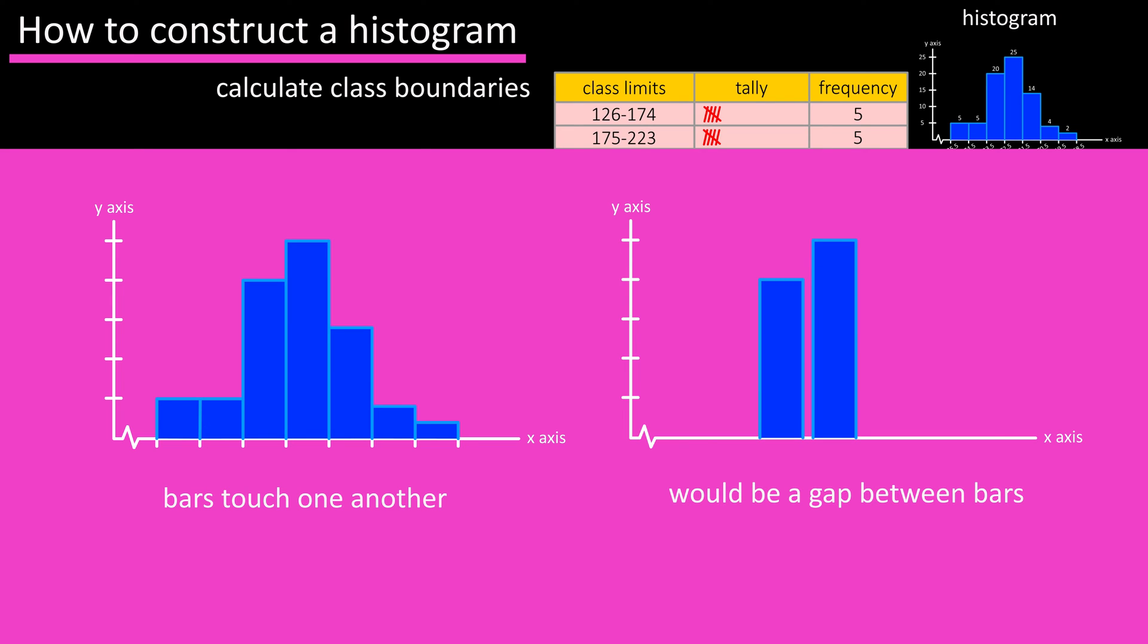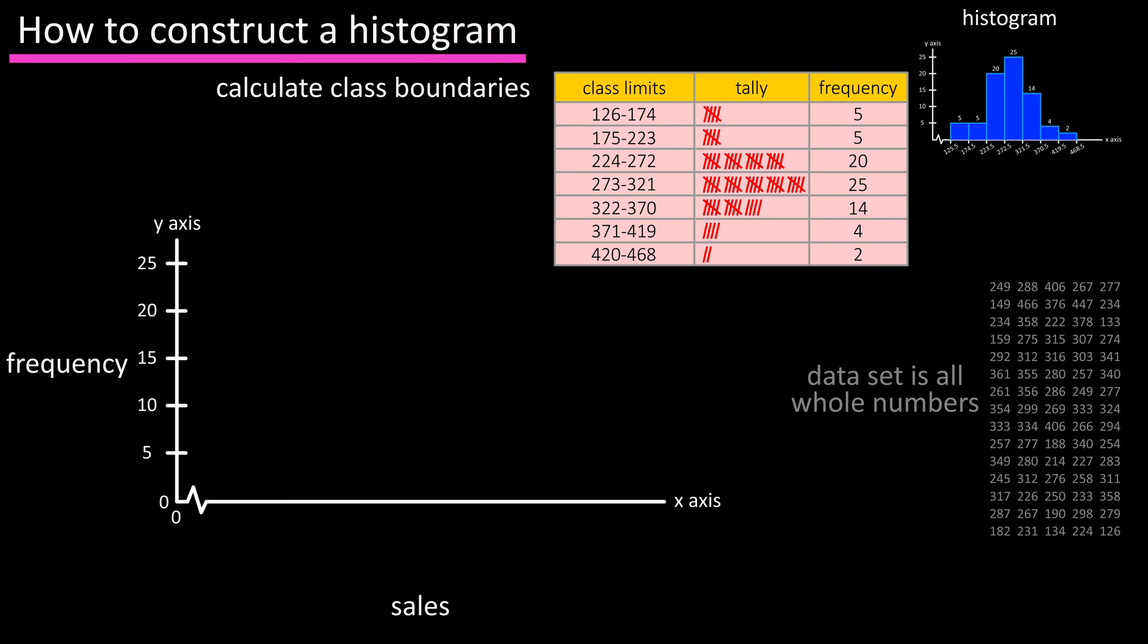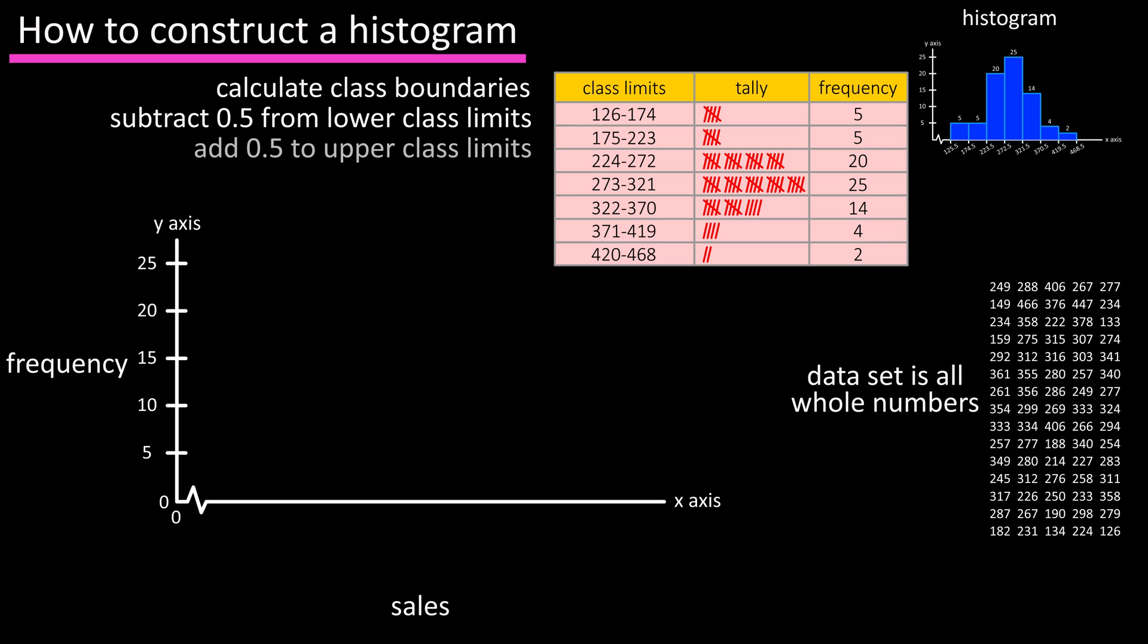For instance, using class limits, the bars for class 1 and class 2 would have a gap between the 174 and 175. Since our data is all whole numbers, we can simply subtract 0.5 from the lower limits of each class and add 0.5 to the upper limits of each class.